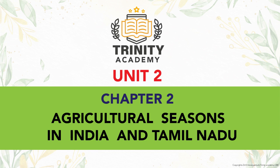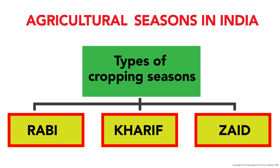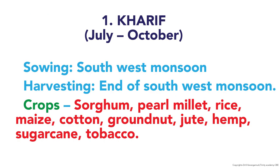We discuss agriculture seasons in India and Tamil Nadu — Chapter 2 of Unit 2: Crop Production and Agricultural Meteorology. In India there are three main seasons: Kharif, Rabi, and Zaid. During Kharif season, crops are grown from July to October. Crops like sorghum, pearl millet, rice, maize, cotton, groundnut, jute, hemp, sugarcane, and tobacco are sown.